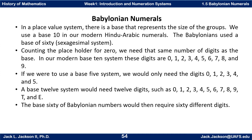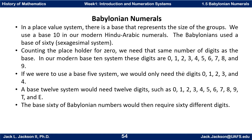We need the same number of digits as the base. In our modern base-10 system, we use the digits 0, 1, 2, 3, 4, 5, 6, 7, 8, and 9. If we were to use a base-5 system, we would only need 5 digits: 0, 1, 2, 3, and 4.